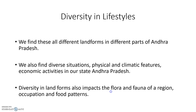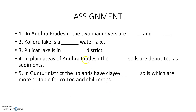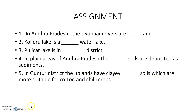A small assignment: In Andhra Pradesh, the two main rivers are ___ and ___. Kolleru Lake is a ___water lake. Pulikat Lake is in ___ district. In the plain area of Andhra Pradesh, ___ soils are deposited as sediments. In Guntur district, the uplands have clayey ___ soils which are more suitable for cotton and chilli crops.